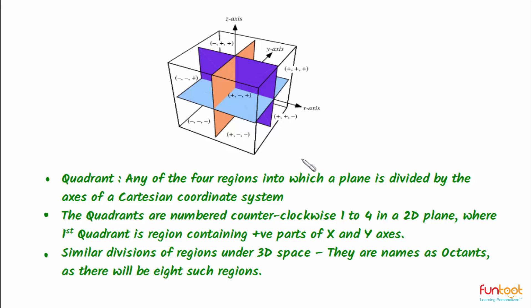Let's summarize what we have learned in this video. We've learned about quadrants: any of the four regions into which a plane is divided by the axes of a Cartesian coordinate system. The quadrants are numbered counterclockwise one to four in a 2D plane.